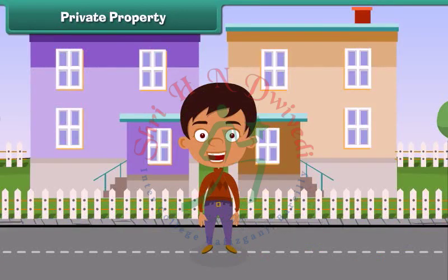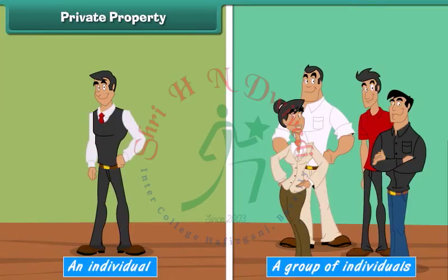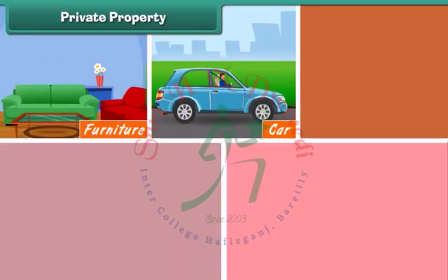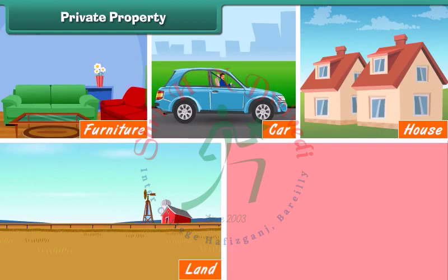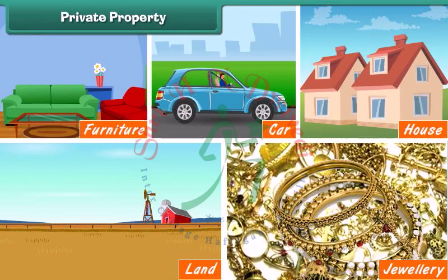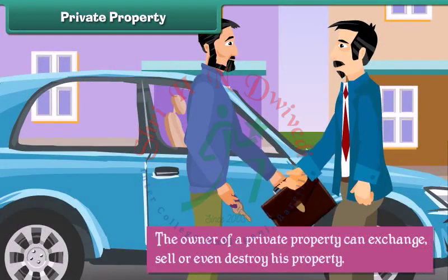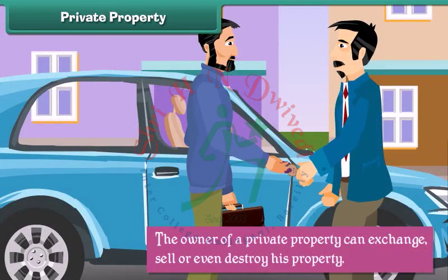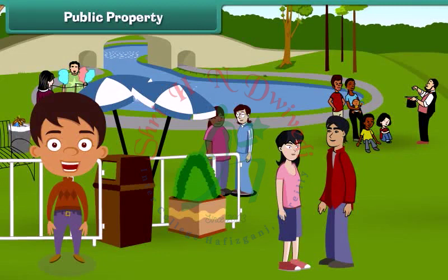Private property is property owned by an individual or a group of individuals. For example, furniture, car, house, land, and jewelry are all private properties because they are owned by a single individual or a group of individuals. The owner of a private property can exchange, sell, or even destroy that property.